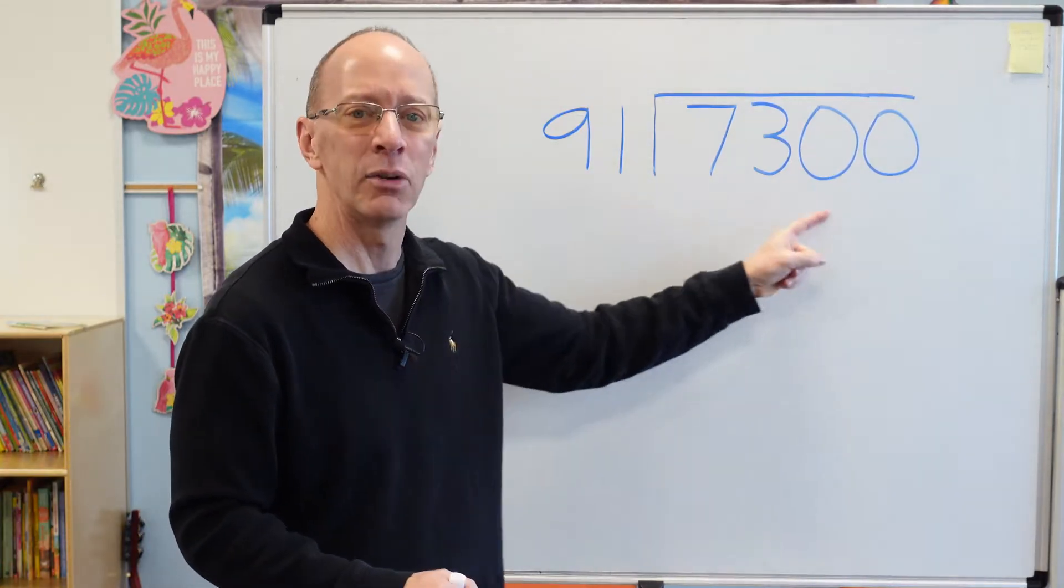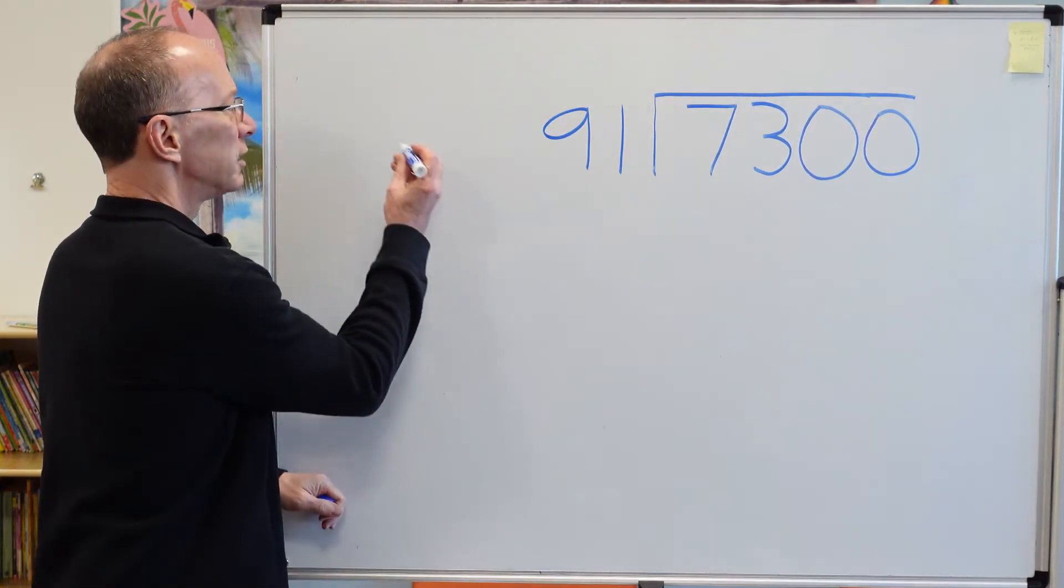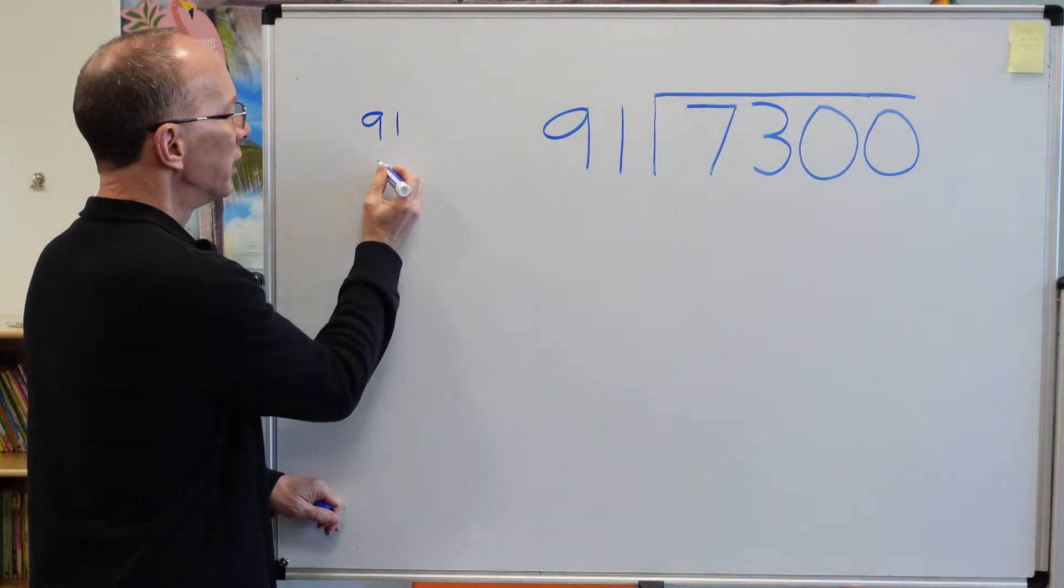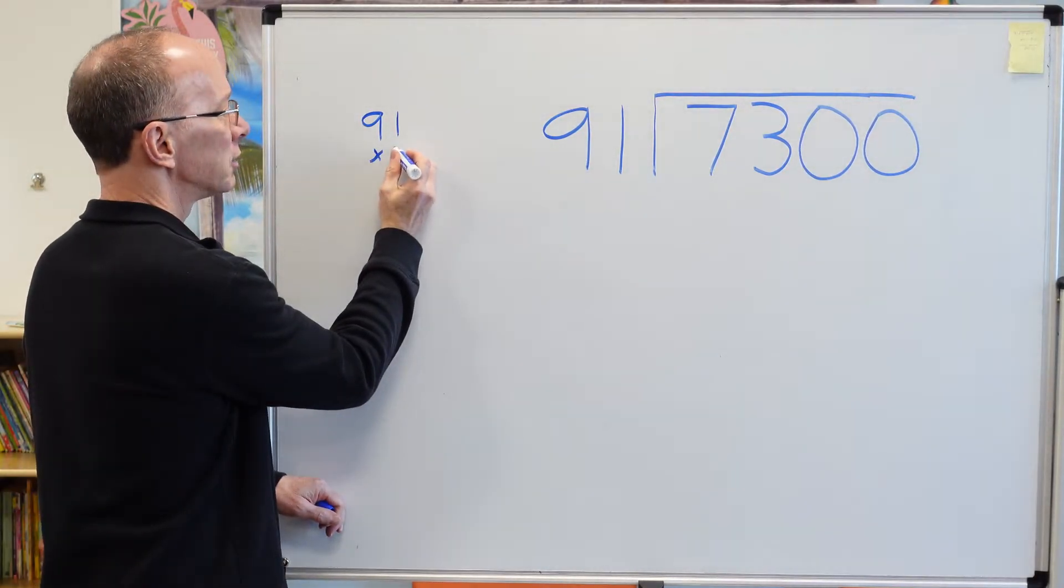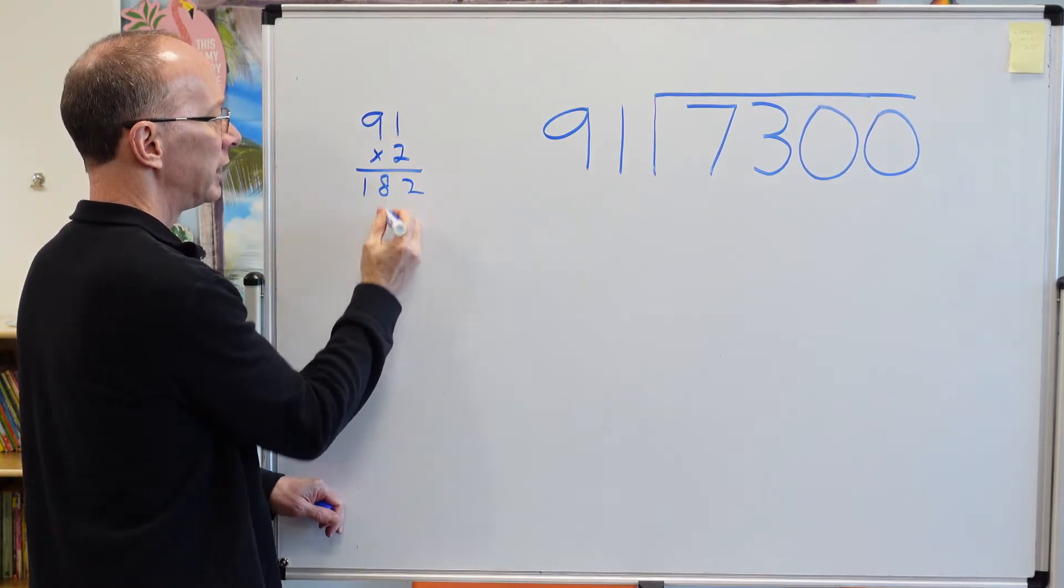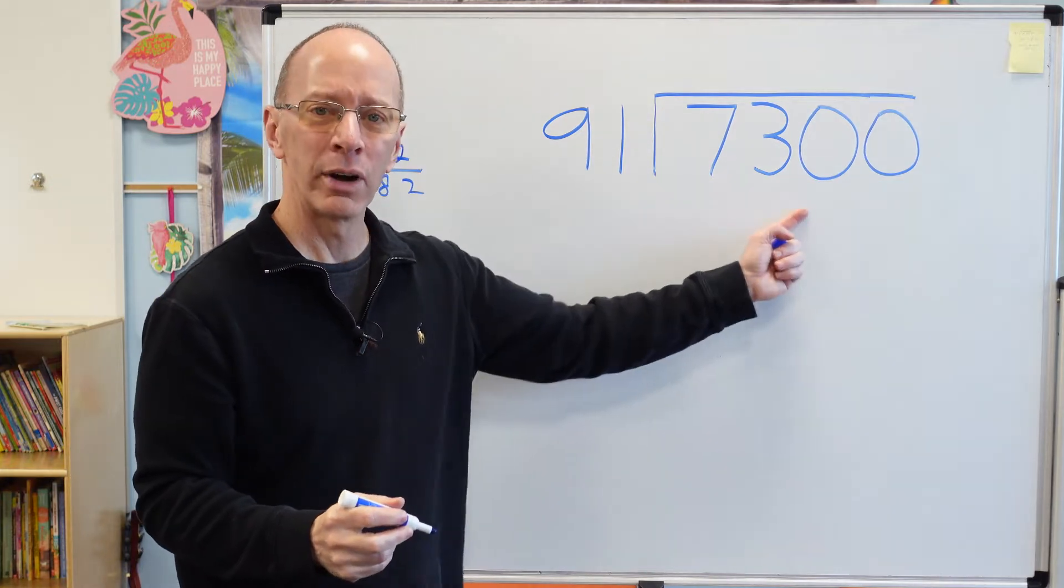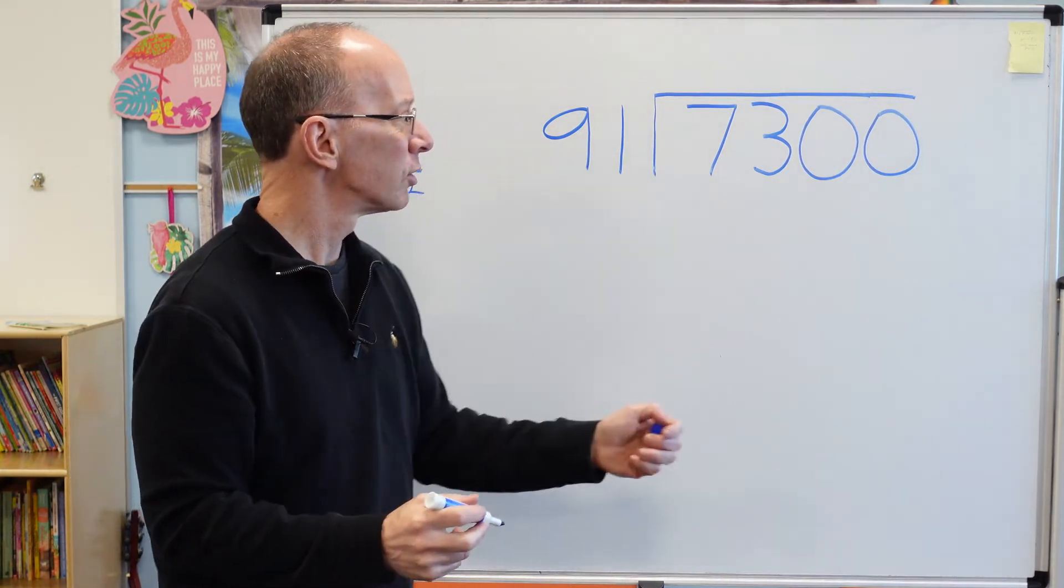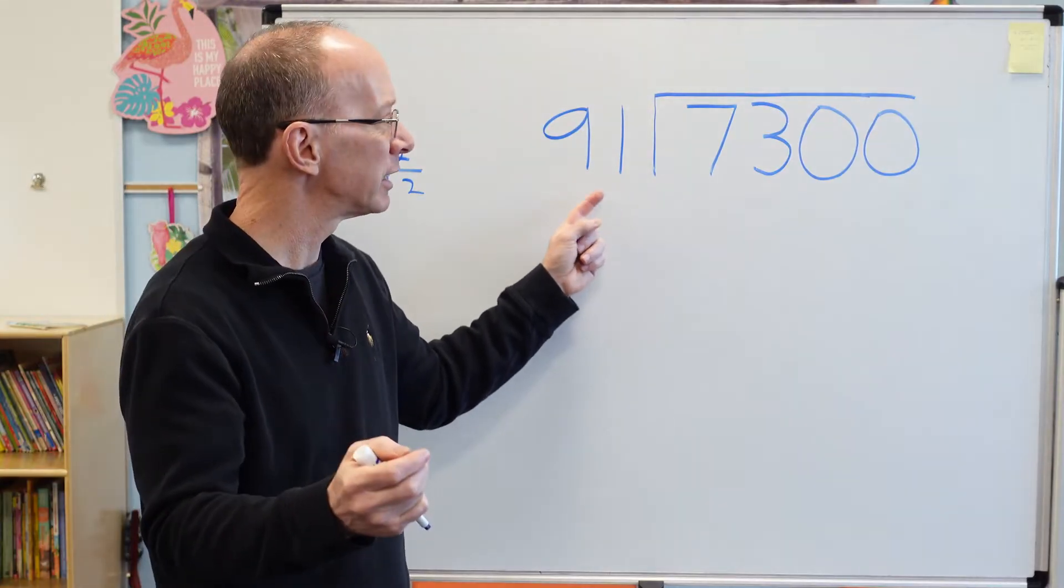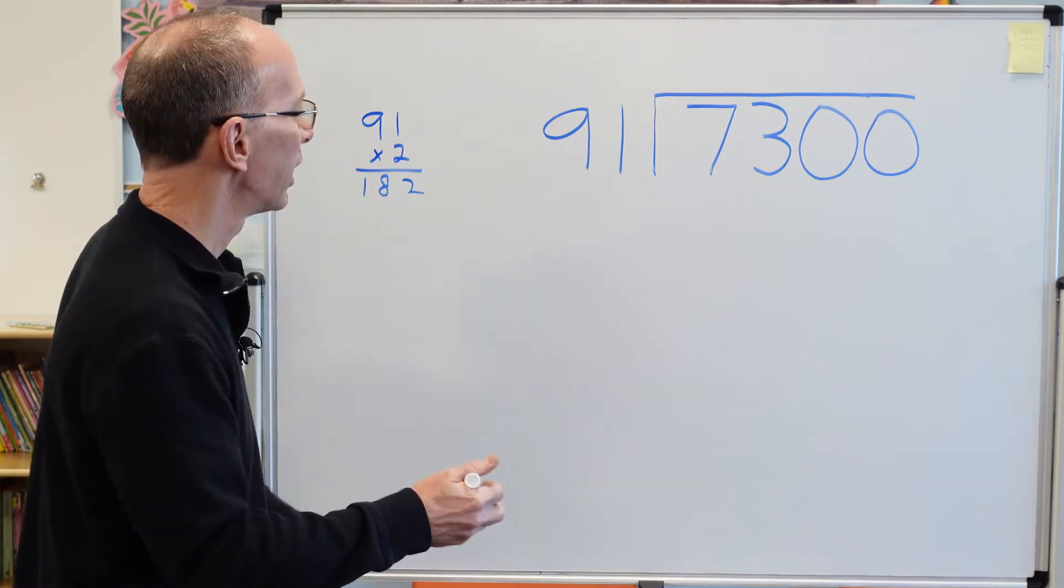Alright, so how many times can I put 91 into 730? Right off to the side you can start doing some little figures here and calculations. So I can put 2 right here. 2 times 1 is 2, 9 times 2 would be 18, so that's 182. That's really far away from 730. So what I'm going to do is round 91 to 100. So how many times can I put 100 into 730? Let's try 7.